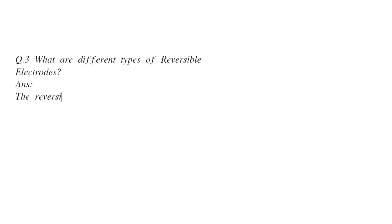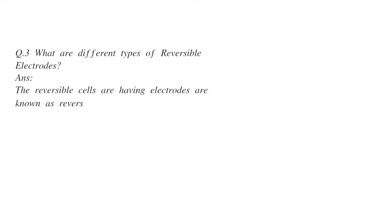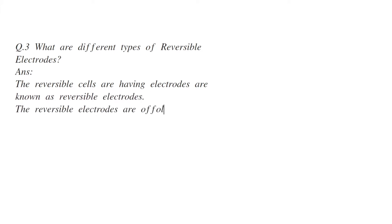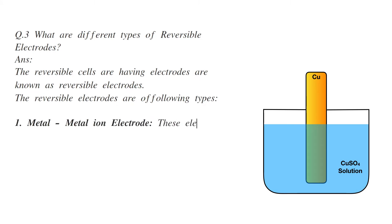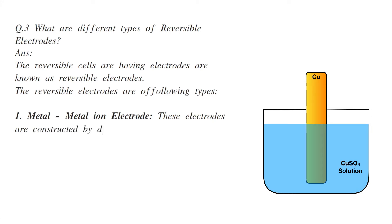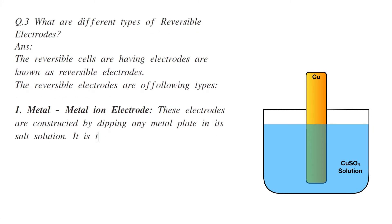What are the different types of reversible electrodes? Reversible cells have electrodes known as reversible electrodes. The reversible electrodes are of the following types. First is the metal-metal ion electrode. These electrodes are constructed by dipping a metal plate in its salt solution. It is the simplest type of electrode.